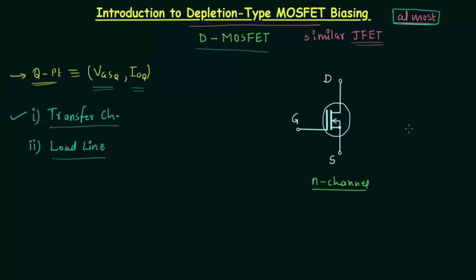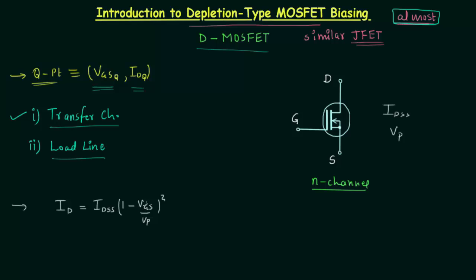Now we will try to understand how the transfer curve in case of N-channel D-MOSFET is almost the same as the transfer curve of N-channel JFET. In case of both D-MOSFET and JFET, the drain current ID follows Shockley's equation: ID = IDSS × (1 − VGS/Vp)². IDSS is the saturated drain current and is given with the device. Vp is the pinch-off voltage, also given with the device. Using this equation we can easily obtain the drain current ID.